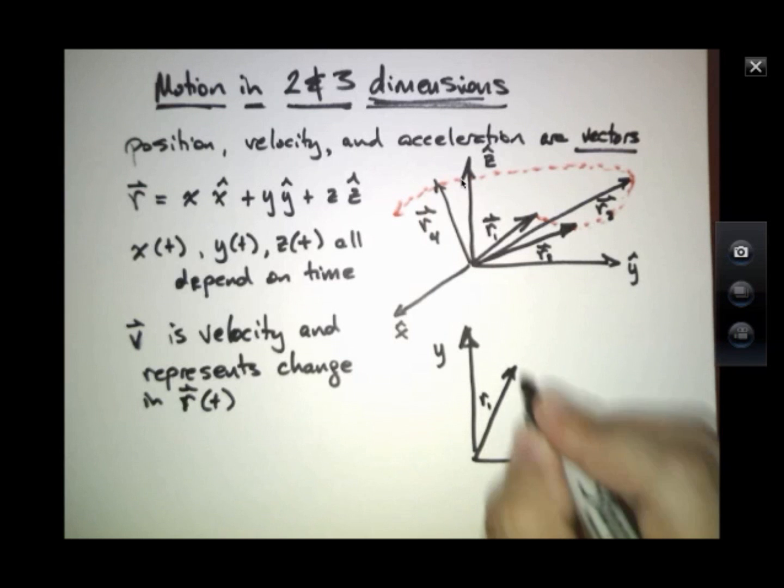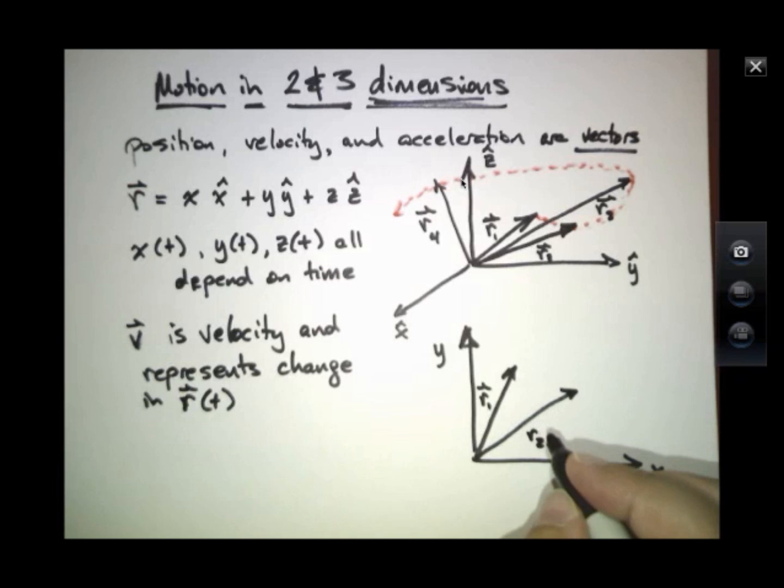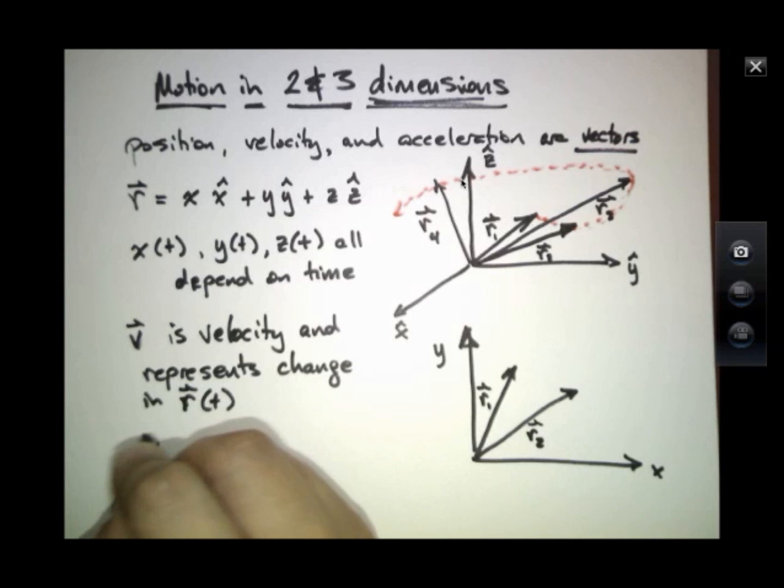Here might be R1, here might be R2. This quantity V is the change in R.